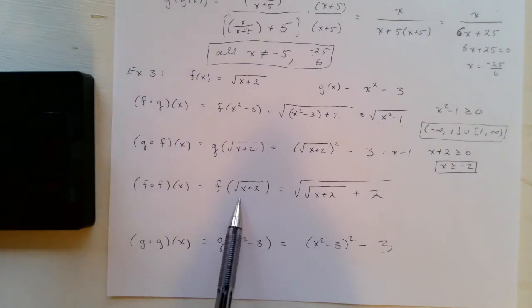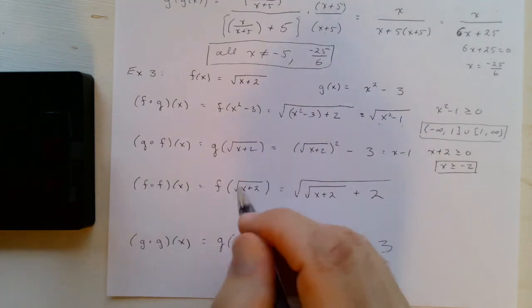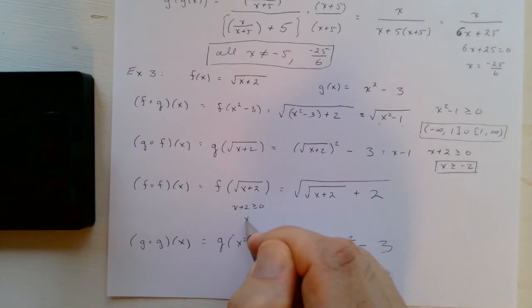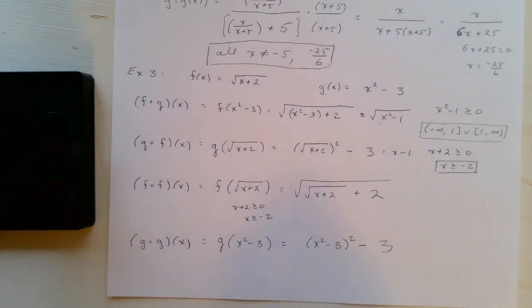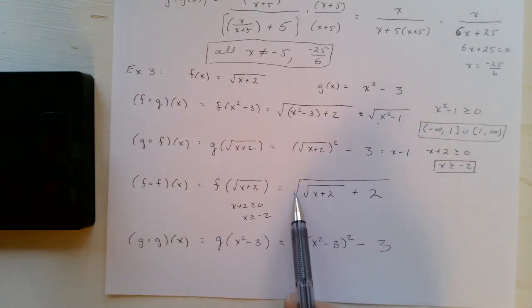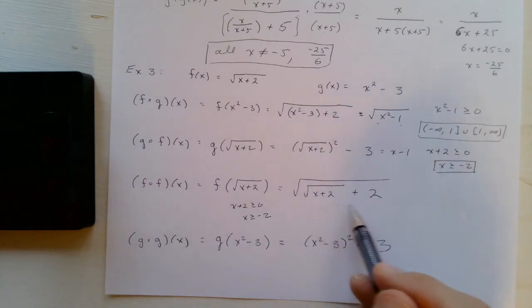All right, f composed with f of x. Once again we need x plus two to be greater than or equal to zero, which means x has to be greater than or equal to negative two.